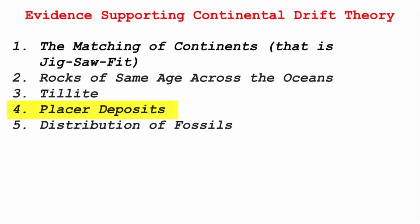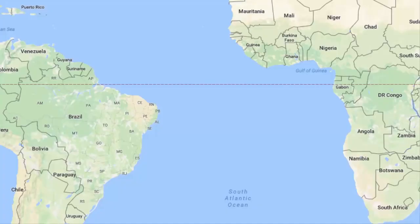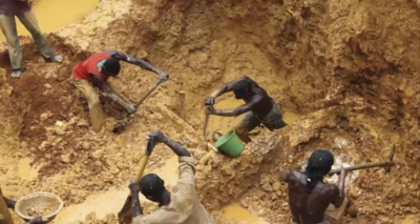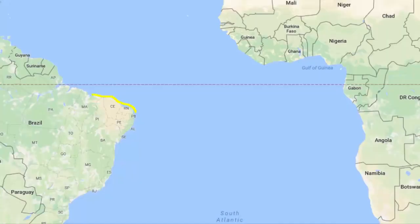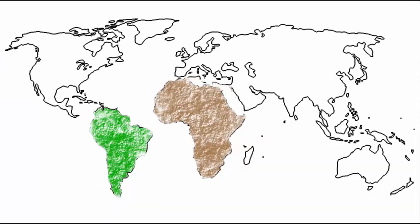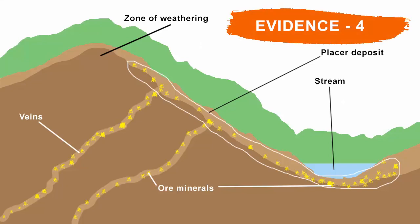The fourth evidence is Placer Deposits — an accumulation of valuable minerals like gold, diamond, etc. The Ghana coast is rich in placer deposits of gold. Usually gold is extracted from rocks, but here in Ghana, gold is found in placer deposits and not in rocks. The same gold placer deposits are available in Brazil as well. Therefore, it is obvious that the gold deposits of Ghana are derived from the Brazil Plateau, when the two continents lay side by side, forming another evidence supporting the Continental Drift Theory.